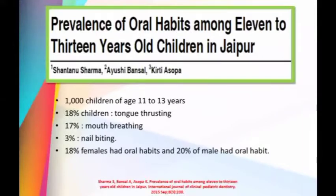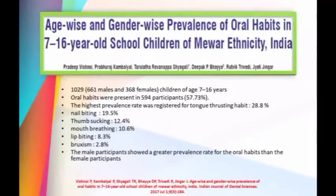A study on prevalence of oral habits among 11 to 13 year old children in Jaipur also examined 1000 children, finding that 18% had tongue thrusting and 17% had mouth breathing. In a study of age-wise and gender-wise prevalence in 7 to 16 year old children of Mewar ethnicity, India, 1029 children were examined, of which 594 had oral habits. The prevalence rate for tongue thrusting habit was 28.8%, followed by nail biting, thumb sucking, mouth breathing, and lip biting. Male participants showed a greater prevalence rate than females.